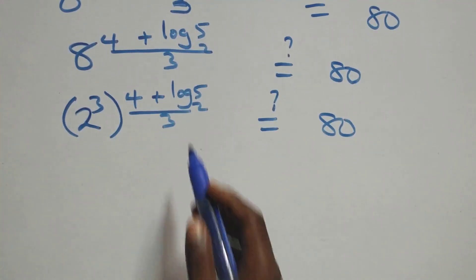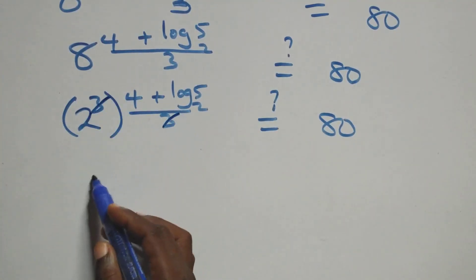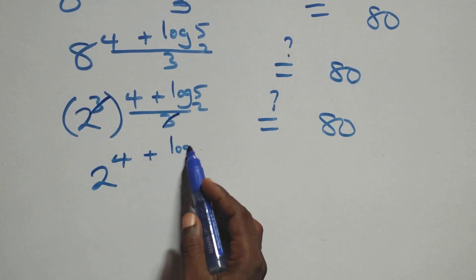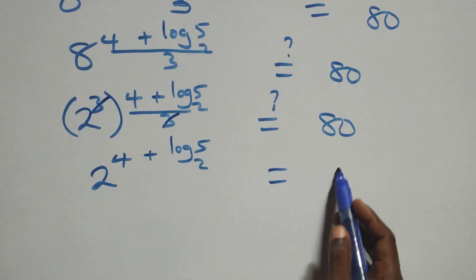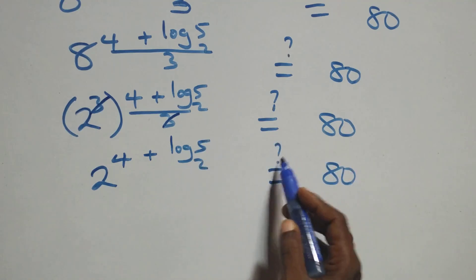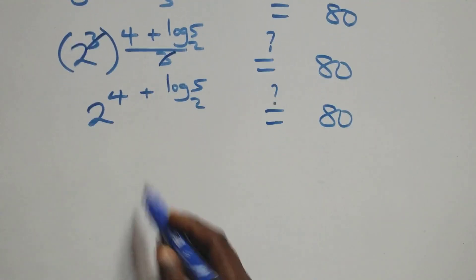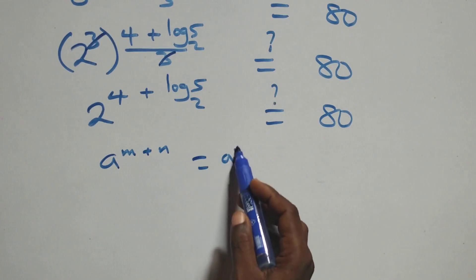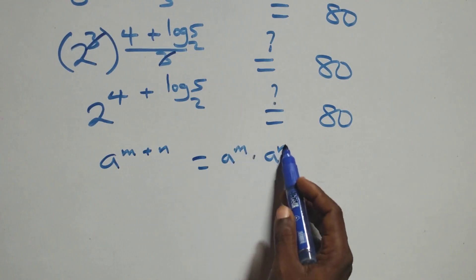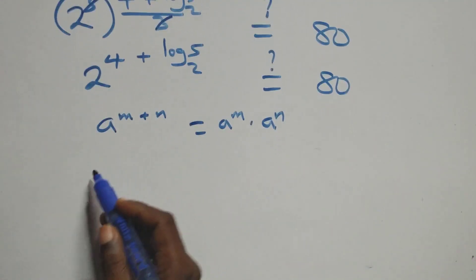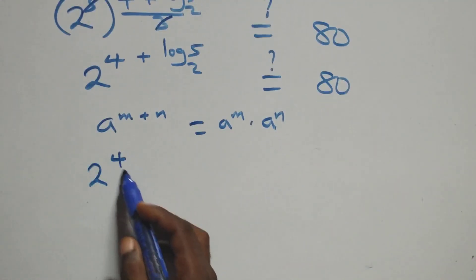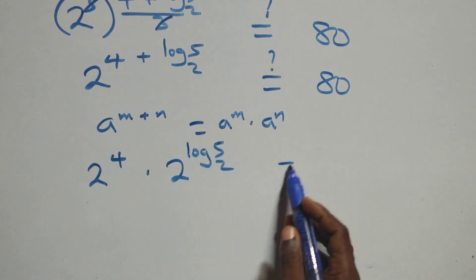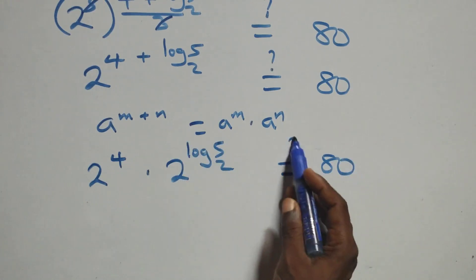At this, we have a raised to power (n plus n) is the same thing as a raised to power n times a raised to power n. So here we have 2 raised to power 4 times 2 raised to power log₂ 5, equals 80.